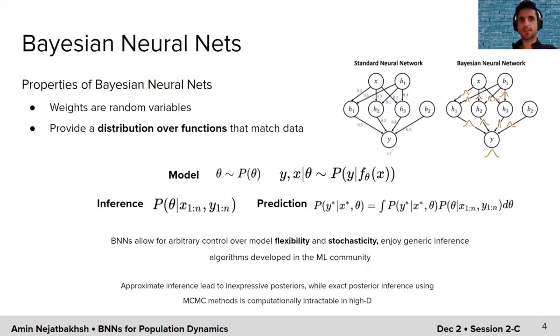Bayesian neural networks that are recently proposed, they treat the weights of a neural network as random variables instead of just constant numbers, and they provide a distribution over all the functions that match the input data. So, the way that they model the problem is that they assume a prior distribution over the weights of a neural network, and then the output of the neural network is given using observation distribution. In the inference part, we infer a posterior distribution over the weights of this neural network, given all the data, and then based on this inferred posterior, we can make predictions about the new data points. The BNNs are great because they allow for flexibility and stochasticity at the same time. We also have a lot of generic inference algorithms developed within the ML community.